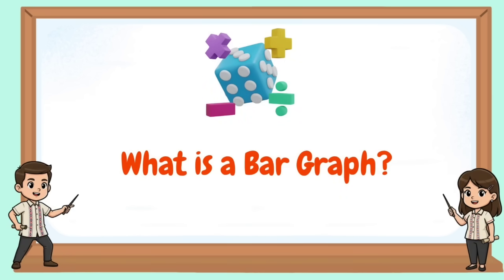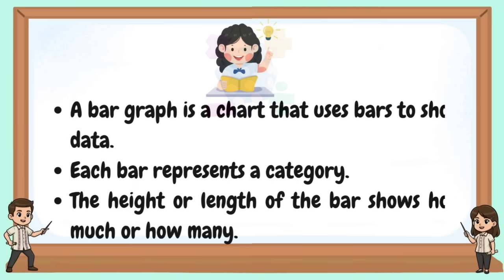A bar graph is a chart that uses bars to show data. Each bar represents a category. The height or length of the bar shows how much or how many.